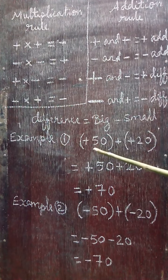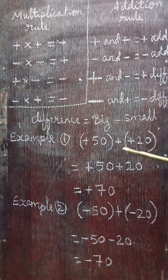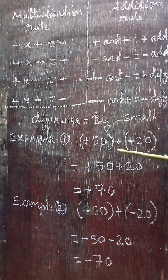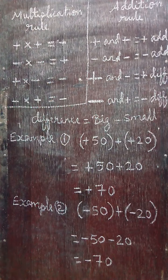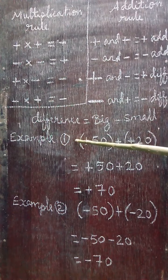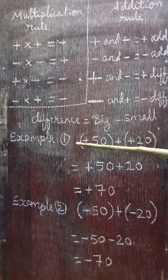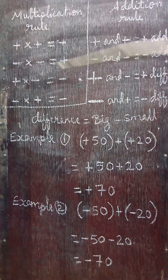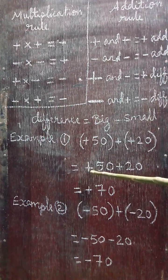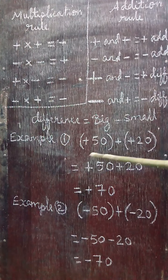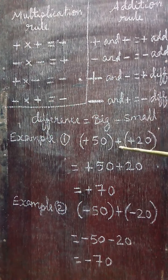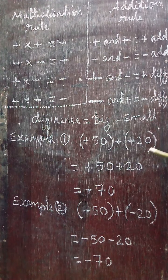Example one: addition of two integers — (+50) + (+20). First, open the bracket using the multiplication rule. The outside sign is plus. Plus into plus gives plus, so we get +50. Plus into plus gives plus, so we get +20. Now apply the addition rule: positive and positive — put plus sign and add the values. 50 plus 20 is 70. So the answer is +70.